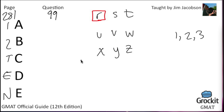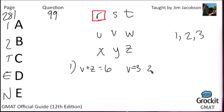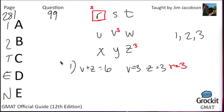We have no other values, so we know R must be 1, 2, or 3, but we don't know which. Statement 1 says V plus Z equals 6. Since all numbers must be 1, 2, or 3, the only way V and Z can equal 6 is if V equals 3 and Z equals 3. So if Z equals 3 and V equals 3, we have a 3 in that column and that row, leaving the only remaining spot for a 3 being where R is. So R equals 3. Statement 1 is sufficient.